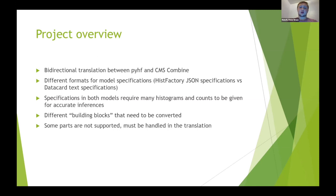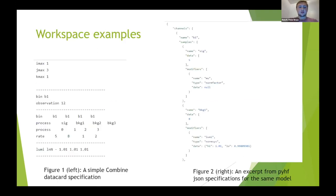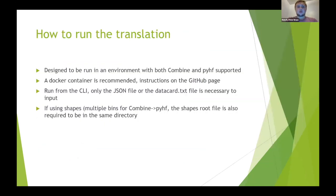Combine has extra features that PyHF might not have, so we need to handle that in the translation and inform the user when something in the data card can't be translated to PyHF. Here are some examples: on the left, a combined data card with channels, processes, and uncertainties; on the right, the JSON spec in PyHF with channels, modifiers, and sample names. When you want to run the translation, I designed it to run in an environment where you can use both Combine and PyHF commands, using a Docker container for the easiest way to attach the Combine installation.